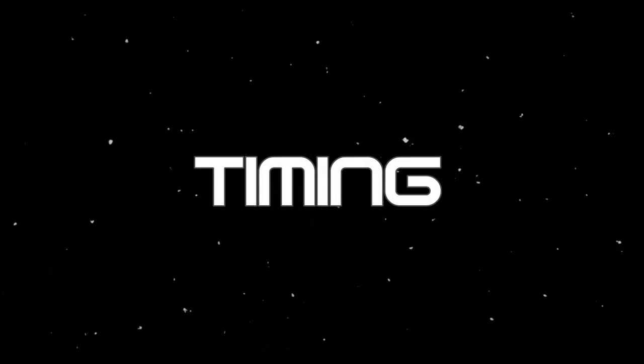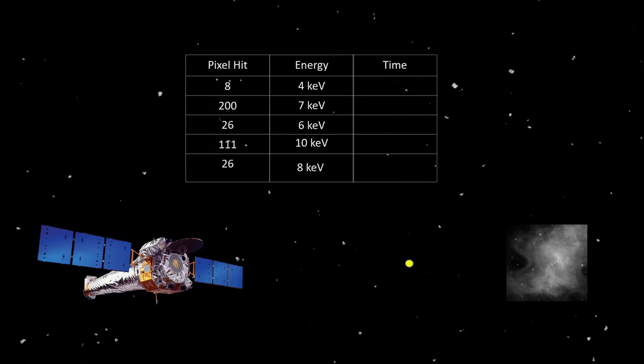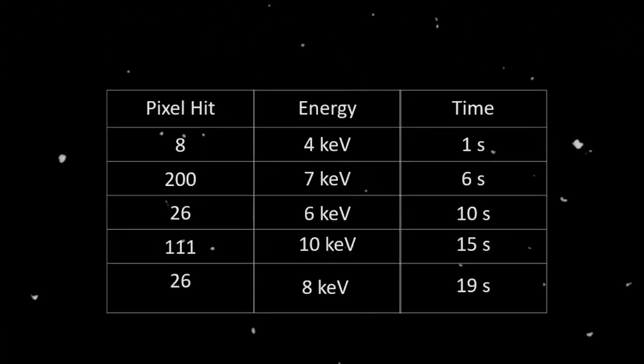The last main type of data that all telescopes will gather is arguably the simplest, and it's actually the type of data that I specialize in analyzing. That is timing data. Every single time a photon or particle of light hits our detector, a timestamp is recorded for the exact moment that particular photon hits the detector. So now we have the coordinates for our image, the energy for the spectral data, and a timestamp for the timing data.